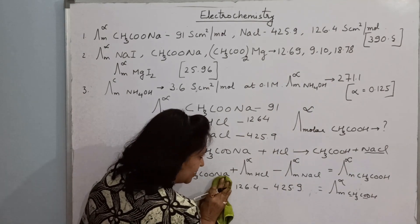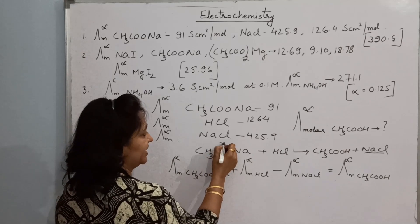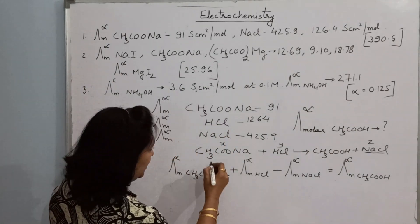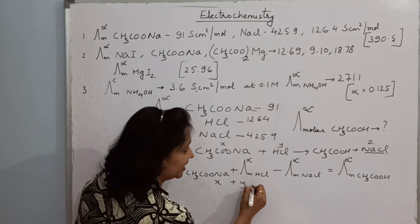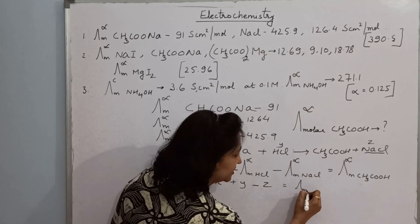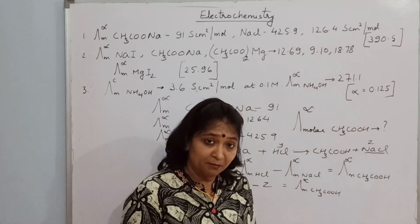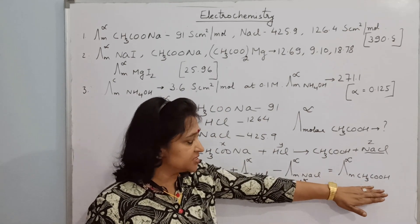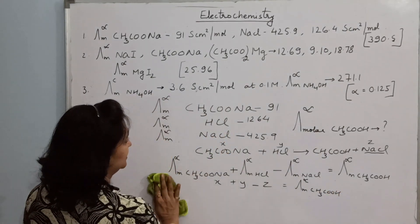If no values are given, we solve in the form of X, Y, Z. Suppose sodium acetate = X, HCl = Y, and NaCl = Z. Then: X + Y − Z will give the molar conductance at infinite dilution for acetic acid. Simply add and subtract the values as needed to get the molar conductance of the desired compound.